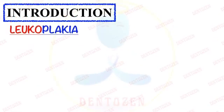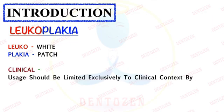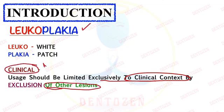First, the introduction. Leuco means white, plakia means patch. So this white patch can be seen only in the mouth clinically. The term leukoplakia is used exclusively in a clinical context by excluding other diseases — other lesions which show white areas should be excluded, and only then should the term leukoplakia be used. So leukoplakia is a clinical entity, and that is a very important point.